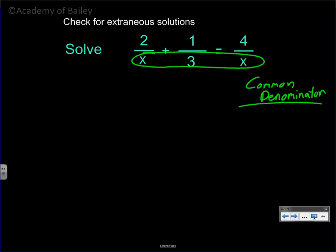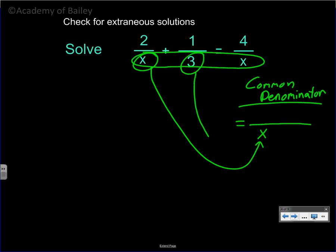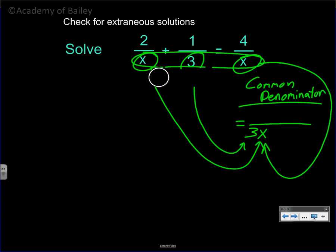There are our three denominators. What's the common denominator? In 2 over x, think about the bottom of the fraction — there's your x. Here we have to have the 3 on the bottom, so I'm putting that in front of the x. And now the last fraction already has x in it, so we don't need to put it in again. Our common denominator is going to be 3x.